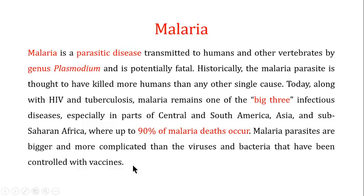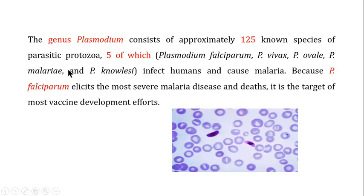Malaria parasites are bigger and more complicated than the viruses and bacteria controlled by existing vaccines, so developing an effective malaria vaccine requires more effort. The genus Plasmodium contains approximately 125 known species of parasitic protozoa, of which only five can infect humans and cause malaria.